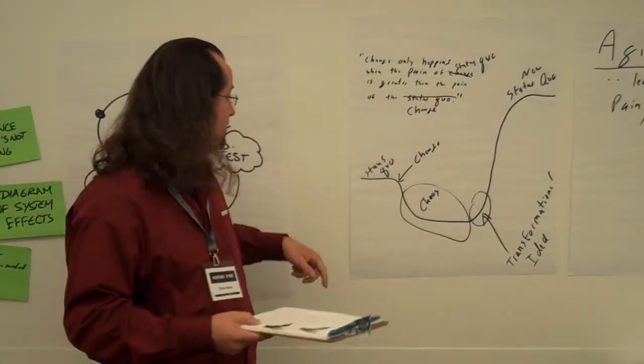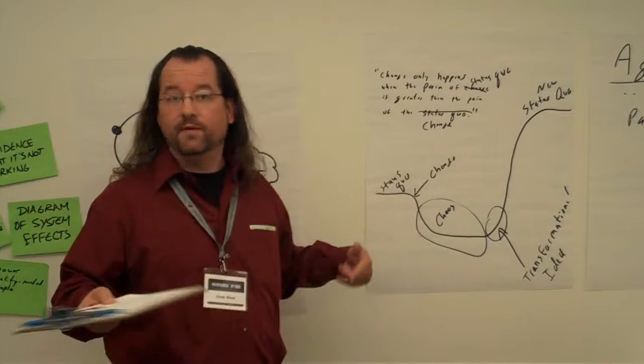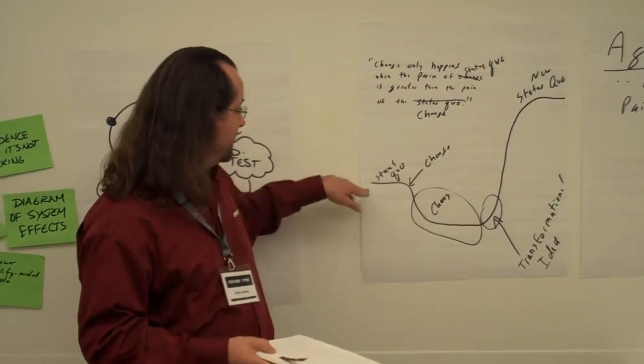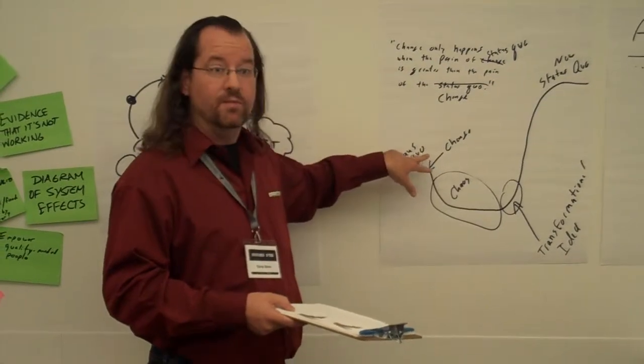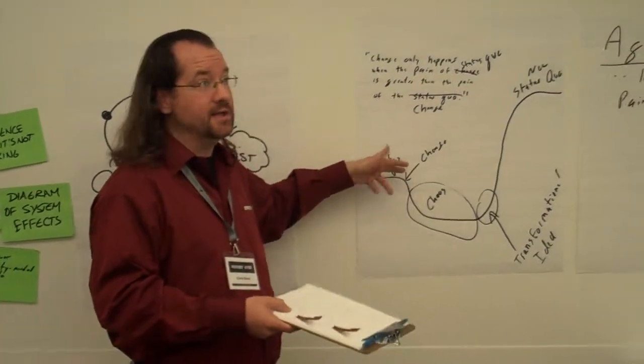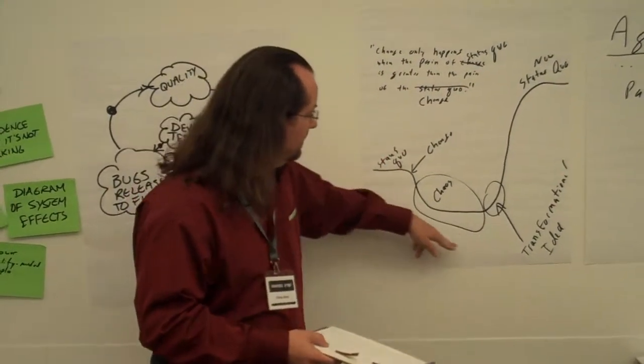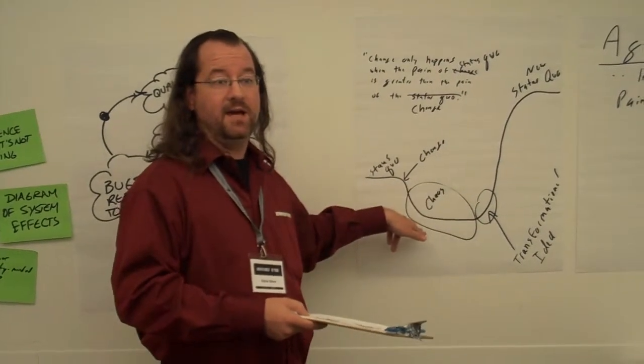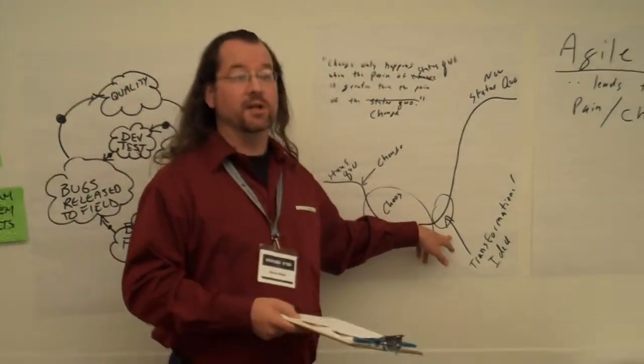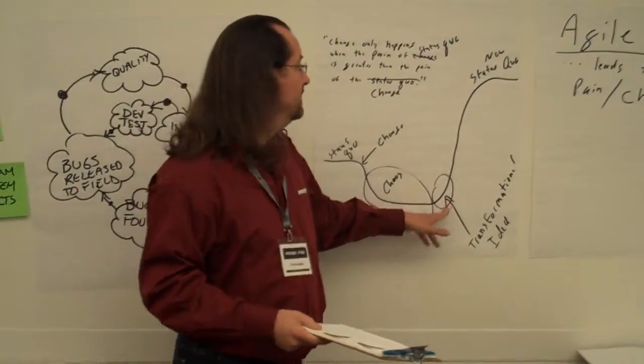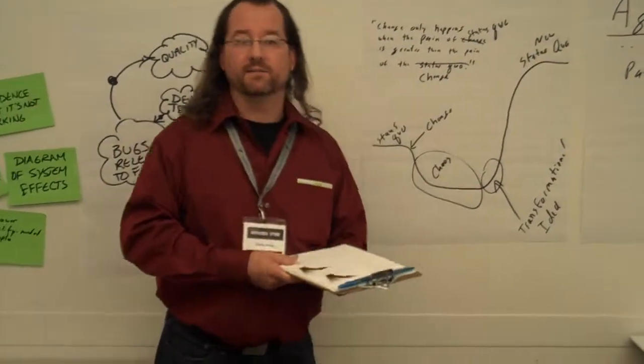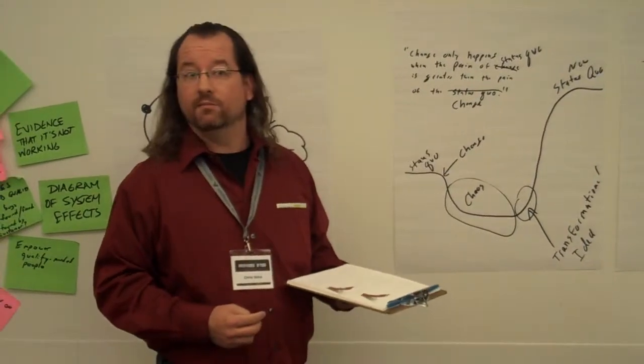We looked at two of the particular examples we discussed and talked about how there was the status quo, the group adopted agile practices successfully and became fast, but threw the organization into chaos. And then at some point there was a transformational idea, like what if we brought the customer to us and then just worked it all out. And then ultimately things reorganized themselves and became a new status quo.